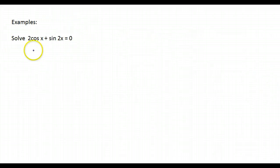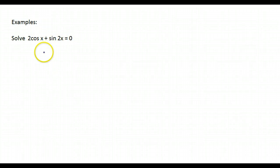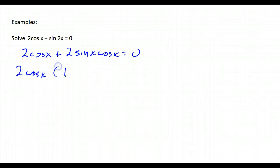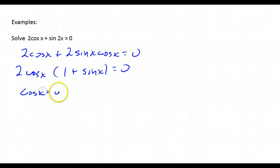Let's use these in some examples. When you have an equation, you want to try and get everything in terms of the same number of x's if possible. I have a cosine of 1x and a sine of 2x, so let's get everything down to 1x. I'll leave cosine of 1x alone and use the formula for sine of 2x: that's 2 sine x cosine x. Now I can factor a 2 cosine x out, which leaves me with 1 plus sine x. Setting each factor equal to 0: cosine x equals 0, and sine x equals negative 1.